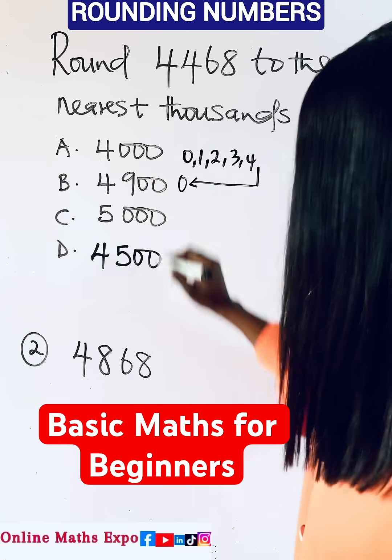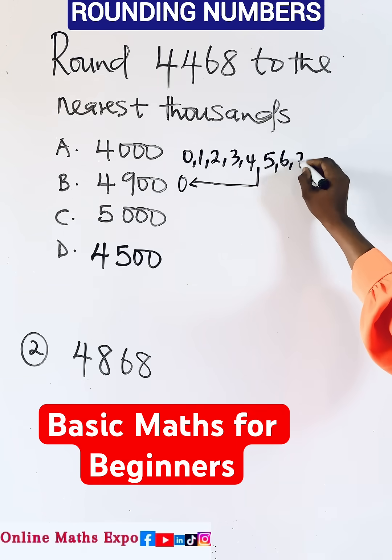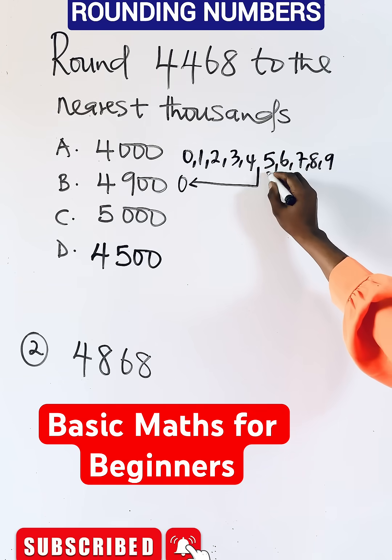Then when you have 5, 6, 7, 8, and 9, you round it up as one.